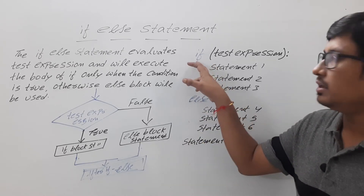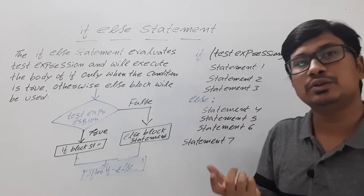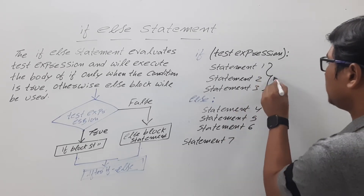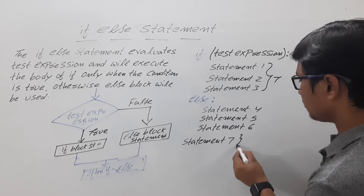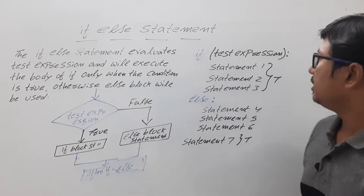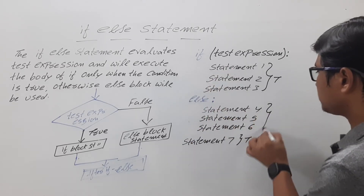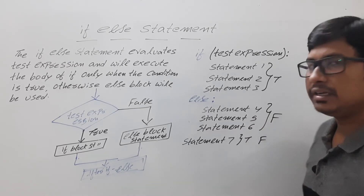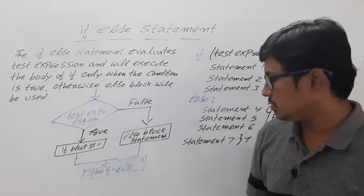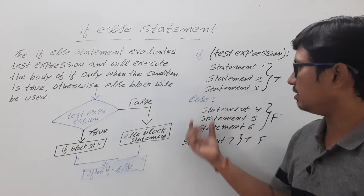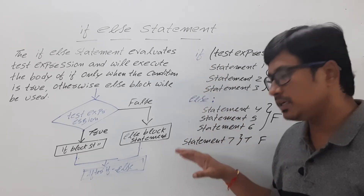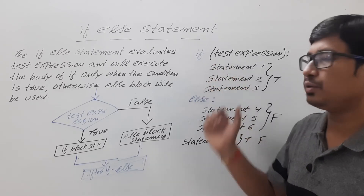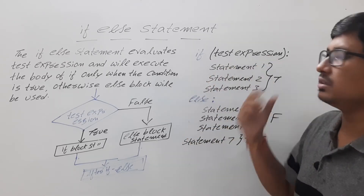You also have a statement seven which does not belong to the else block — it is outside the if-else. If the test expression is true, then statements one, two, three, and statement seven will be executed. If the test expression is false, statements four, five, six, and statement seven will be executed. So statement seven always executes at the end. This is how you use if-else in Python.